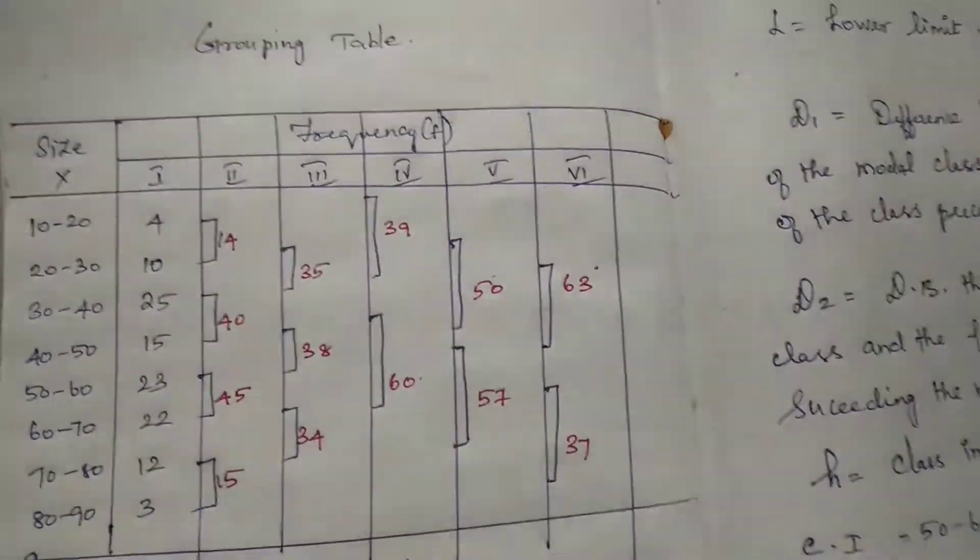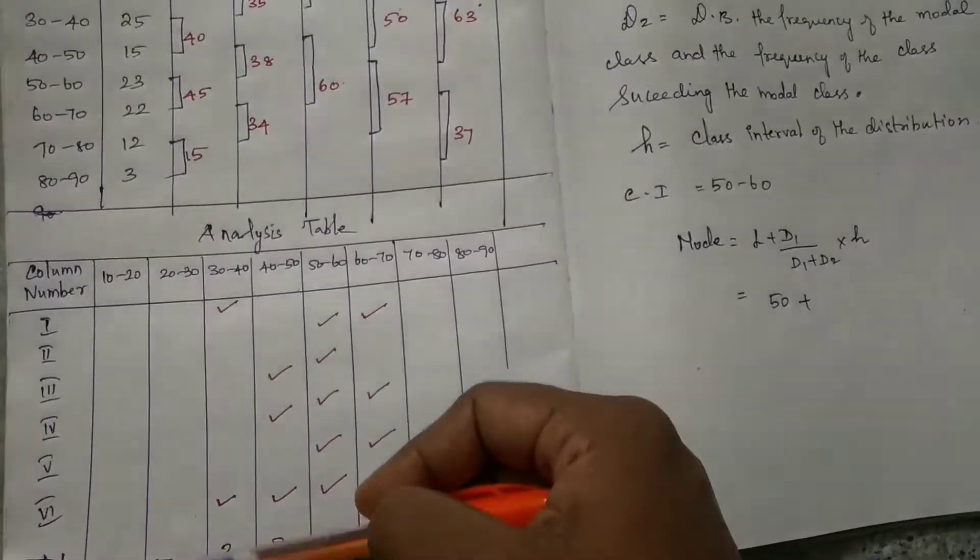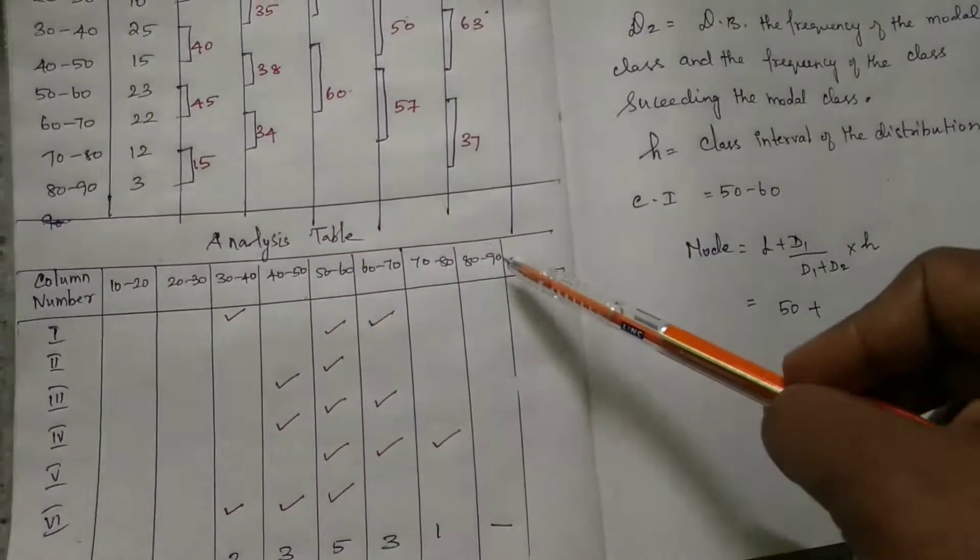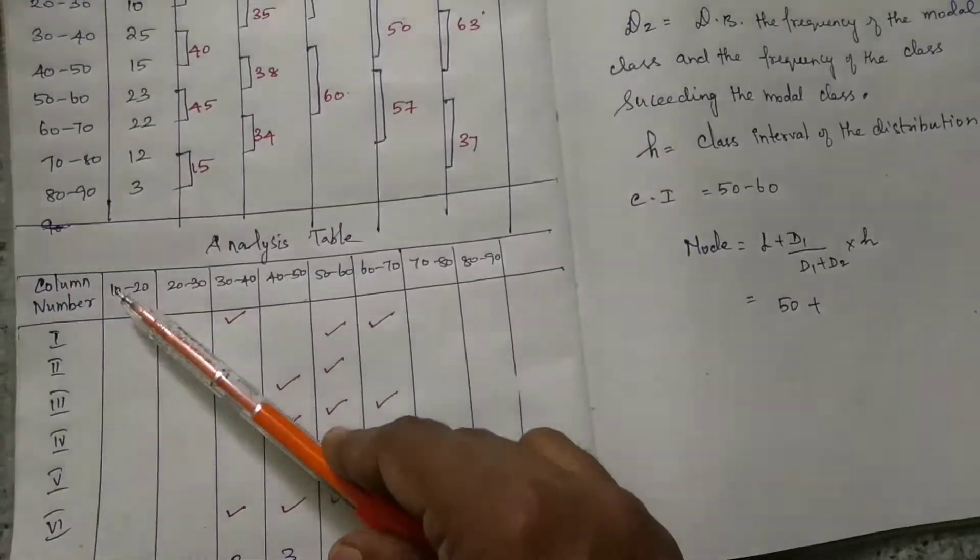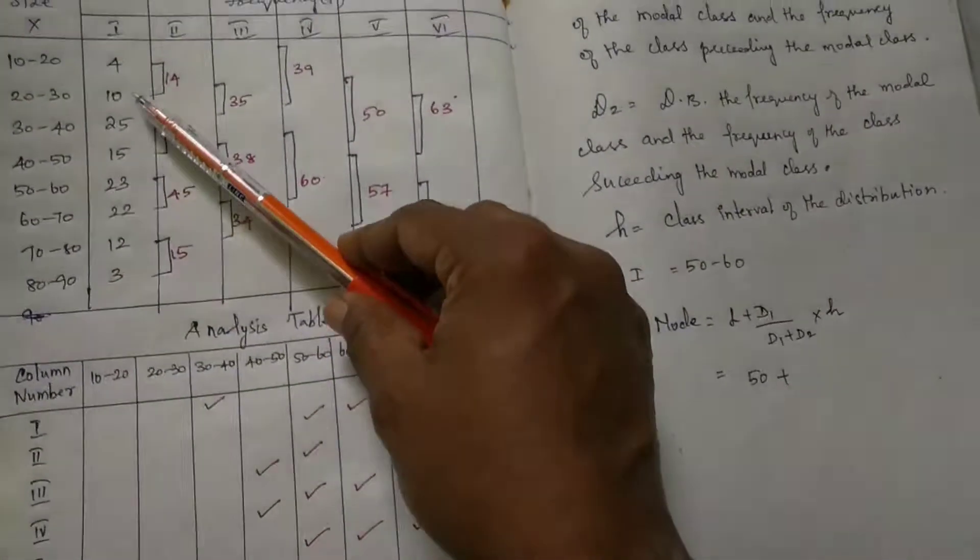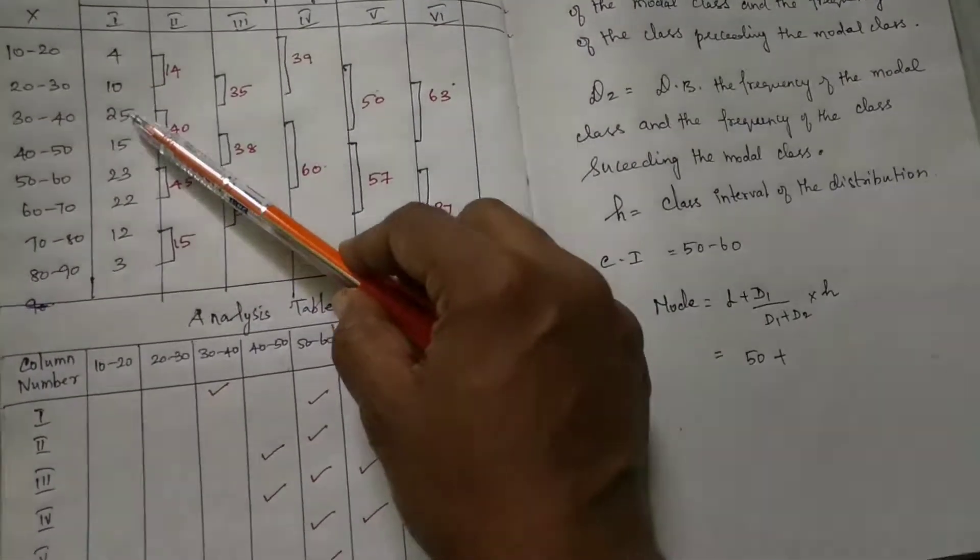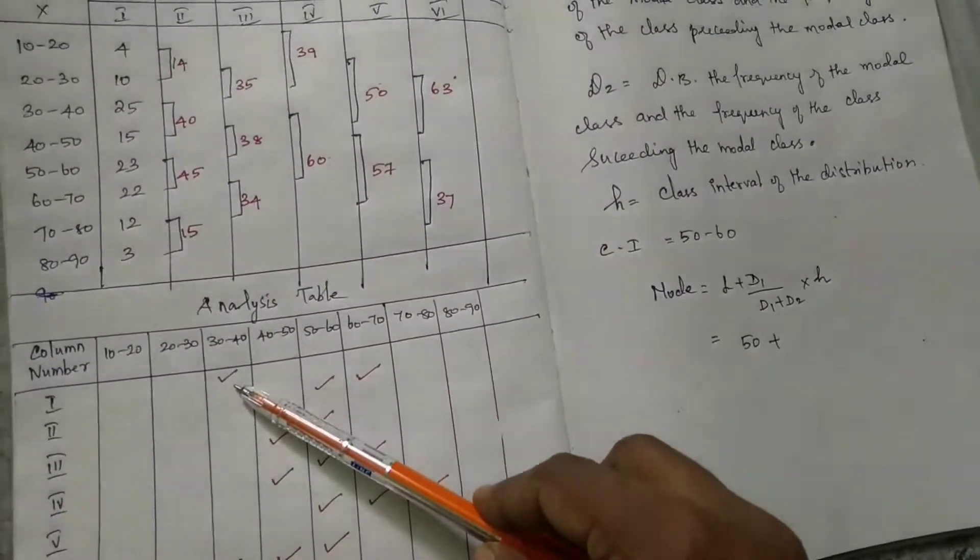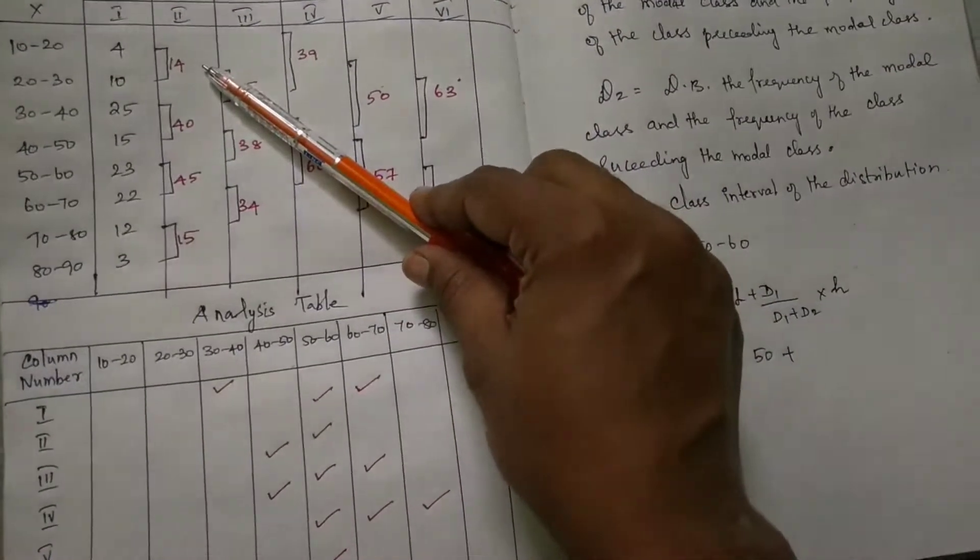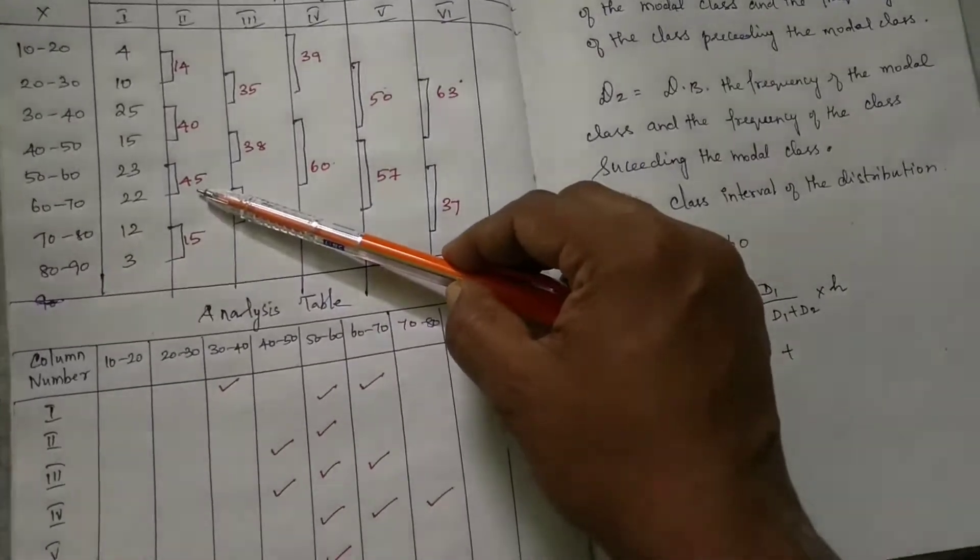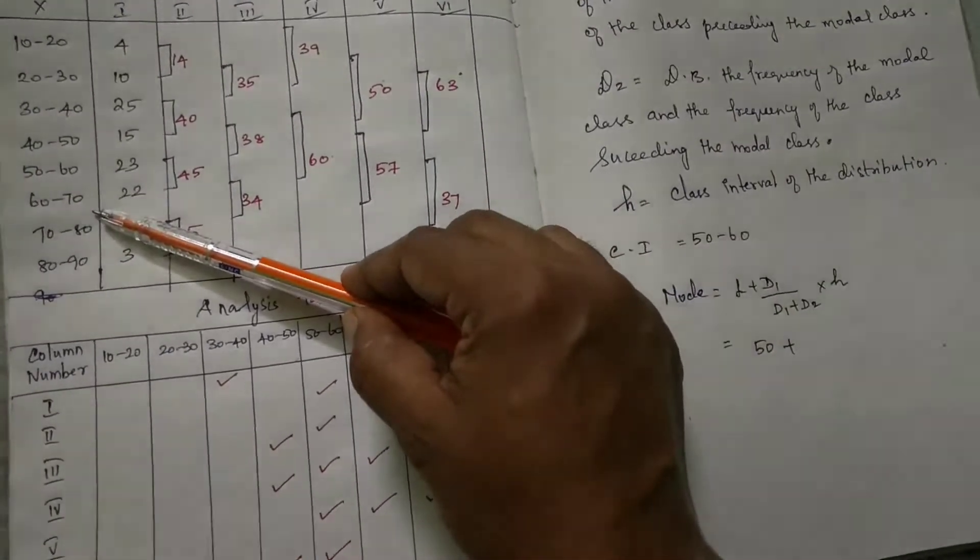Now the analysis table. Columns are on the side and values are on the side - that is the class interval. Now column 1 is 10 to 20, 20 to 30, 30 to 40. Column 1 has the highest frequency of... 44, 45. We add 50 to 60, 60 to 70.